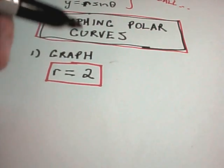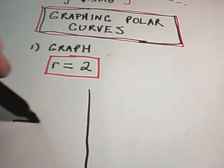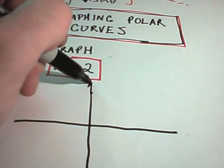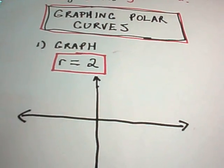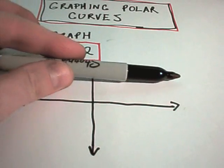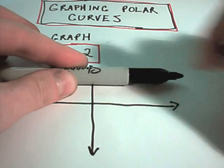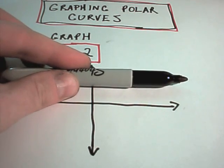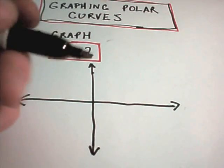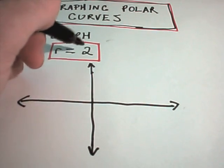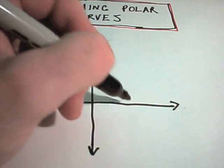In the first one it says graph r equals 2. So what this basically says to do is think about, if you're graphing in x and y coordinates, the line y equals 2. Well, y equals 2 is a horizontal line, and if you think about it, you're basically putting a dot everywhere where there's a y coordinate of 2, and that makes the horizontal line. r equals 2, you're doing the same thing. You're putting a dot everywhere the radius is 2, but you don't care what the angle theta is.